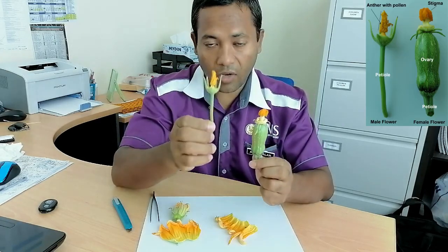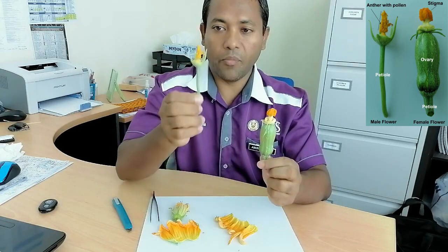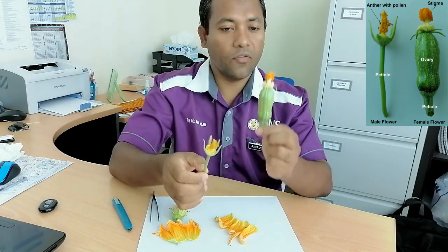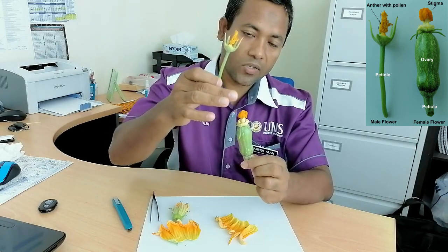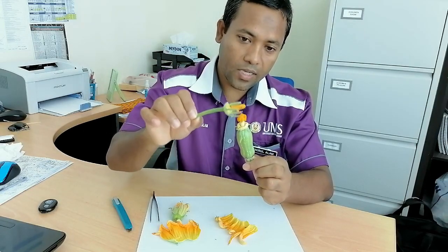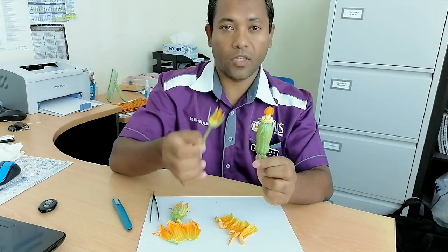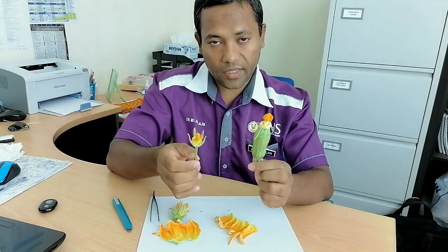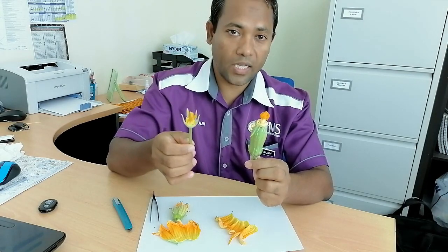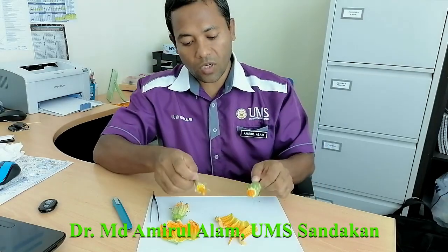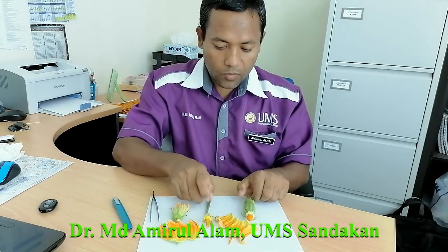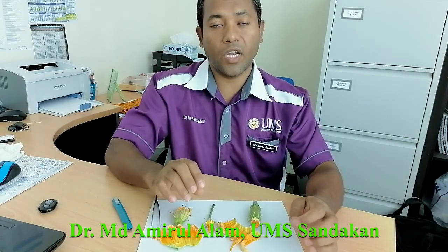In summary: in cucurbits like pumpkin, the male flower has the anther which carries the pollen, and the female flower has the ovary and the stigma at the top. Whether it is self-pollination from the same plant, or cross-pollination with the male from another plant, by this way you maintain the inbred lines or develop hybrid F1 seed. This is all about cross-pollination, self-pollination, and identification of monoecious crops — the cucurbits, the pumpkin — from the field of the Faculty of Sustainable Agriculture, University of Malaysia Sabah, Sandakan Campus.